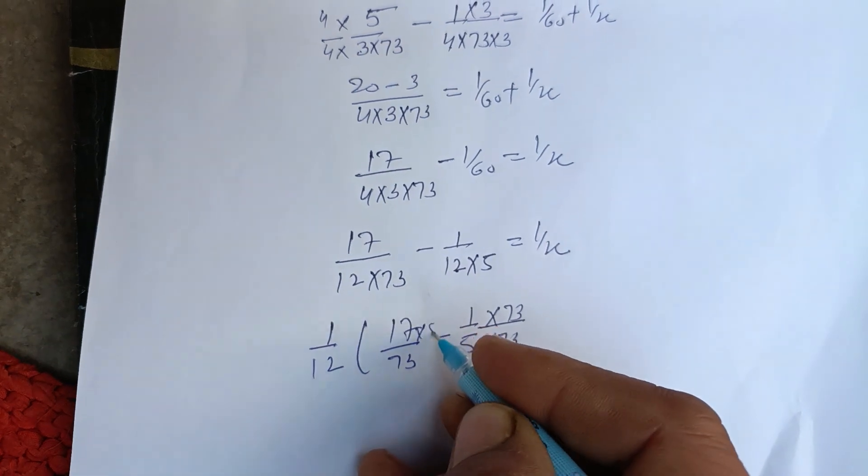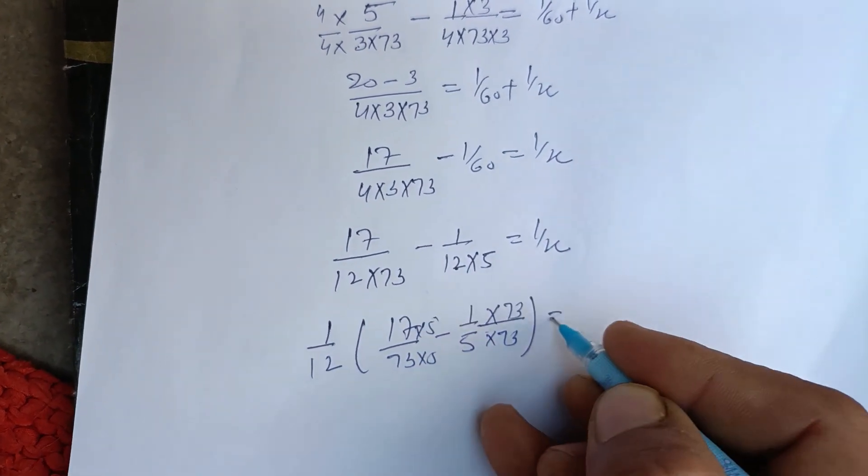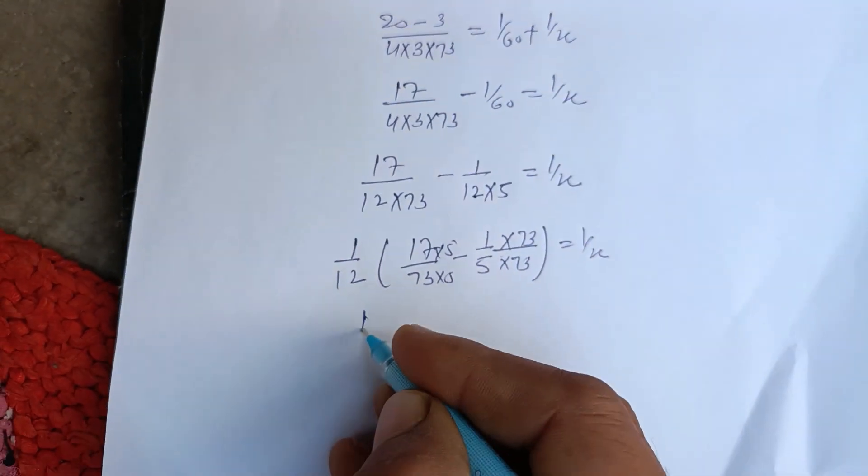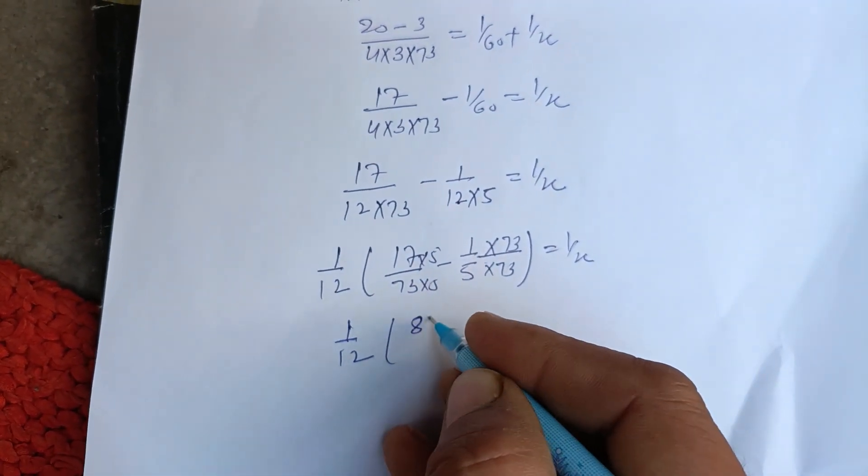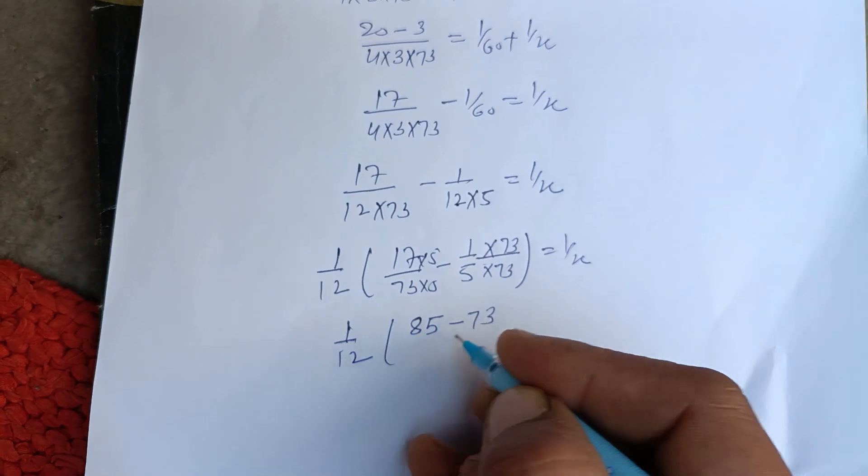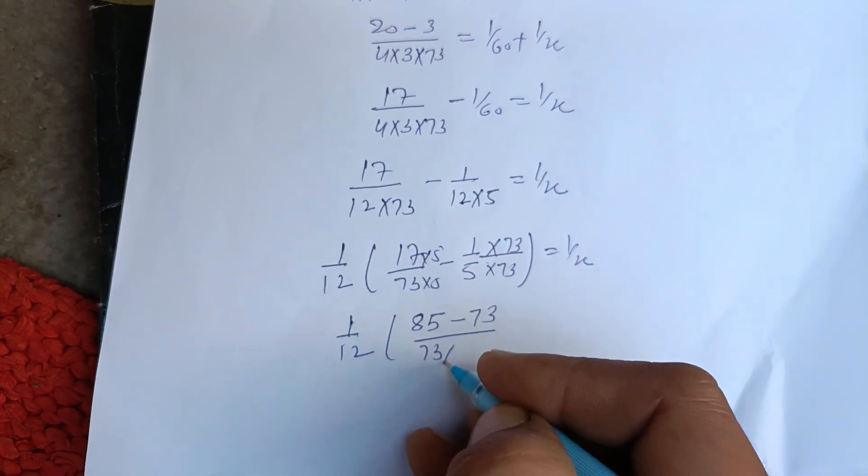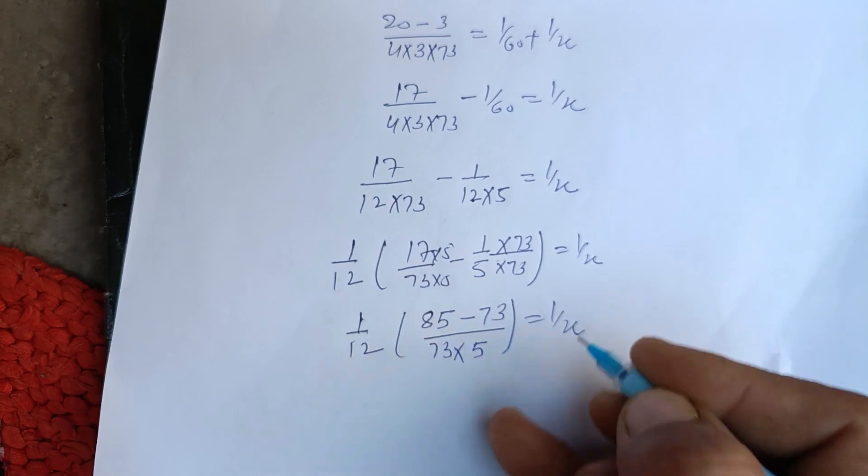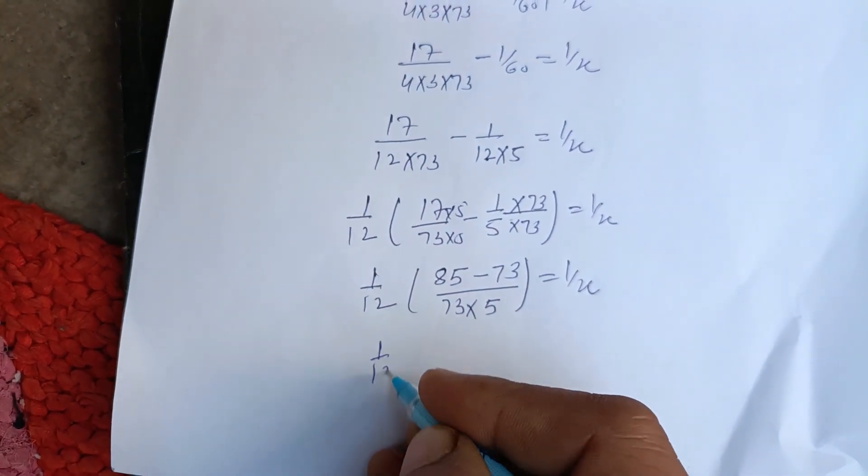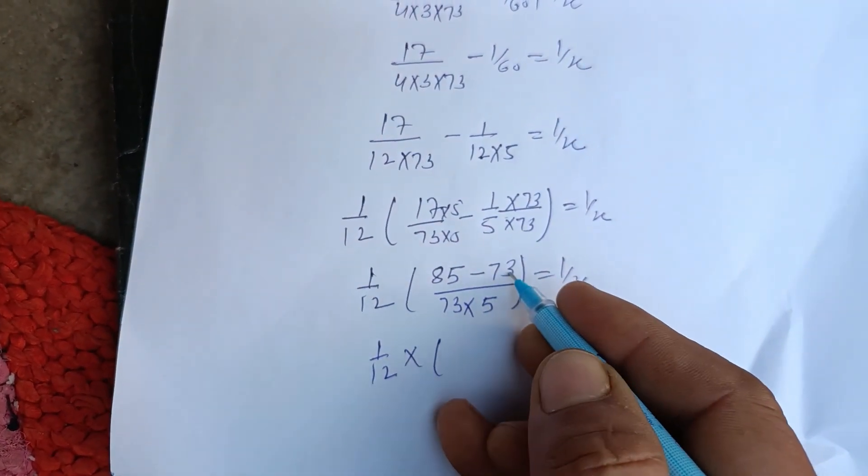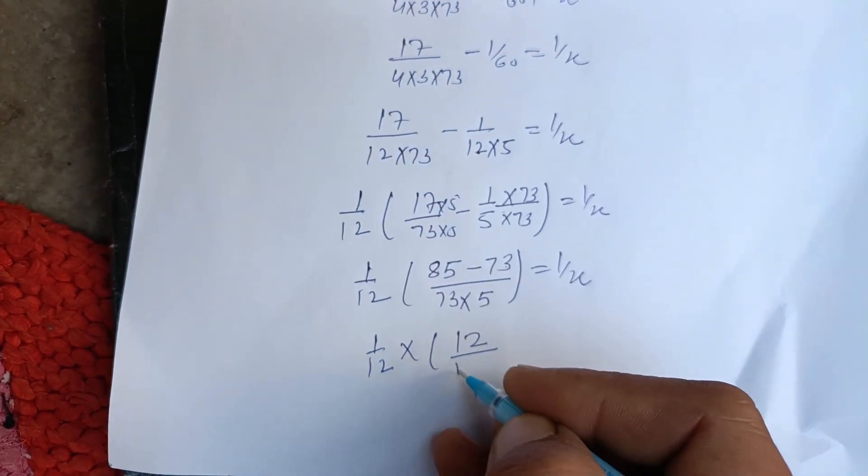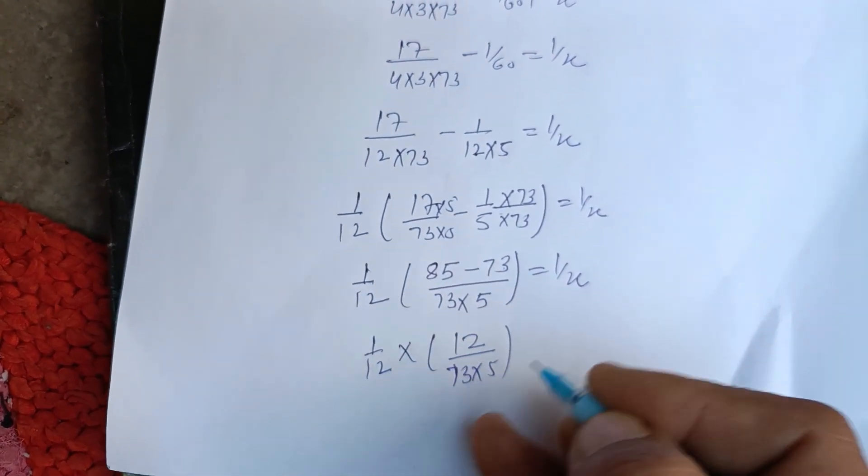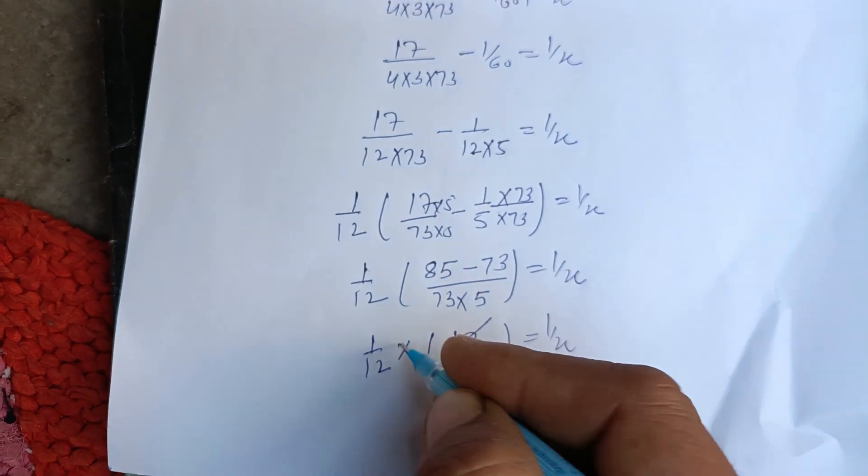This becomes 1/12 × [(85 - 73)/(73×5)] = 1/x. 85 minus 73 is 12, so 1/12 × 12/(73×5) = 1/x. The 12s cancel.